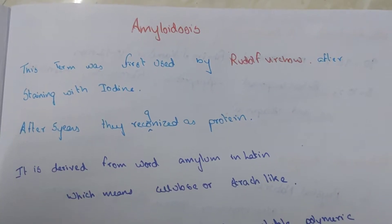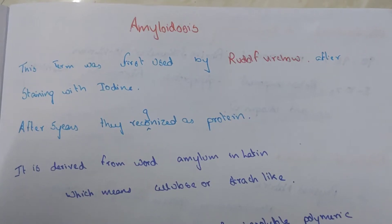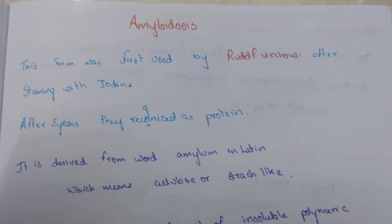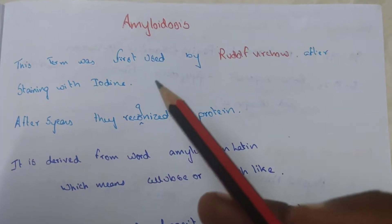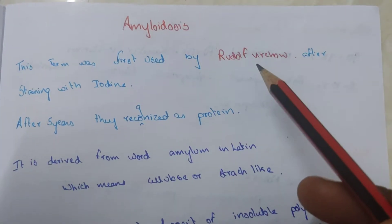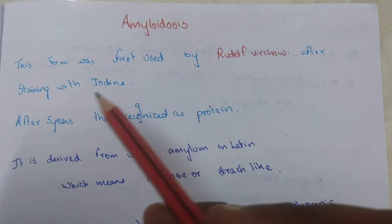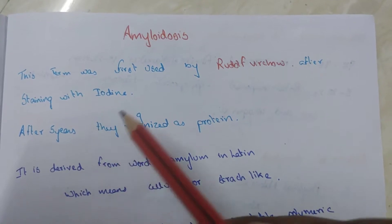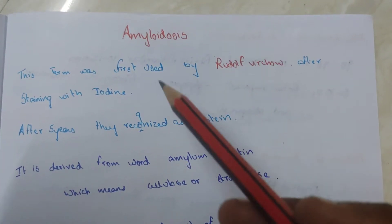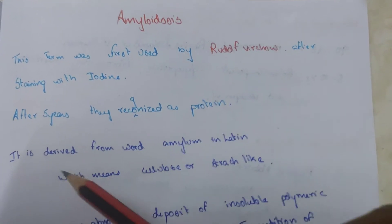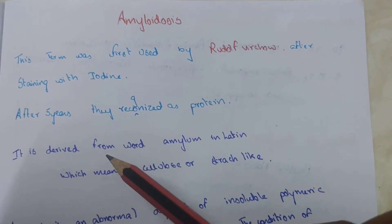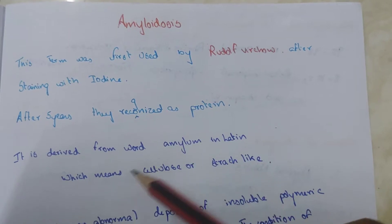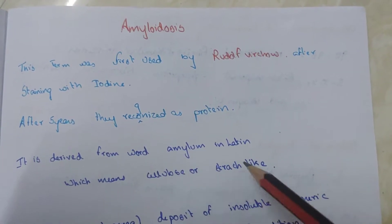Hi everyone, welcome to Medicine Not YouTube channel. Here we are going to see about amyloidosis. This term was first used by Rudolf Virchow after shining in iodine. After five years, they recognized amyloidosis as a protein. It is derived from the word 'amylum' in Latin, which means cellulose or starch.